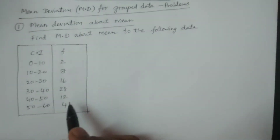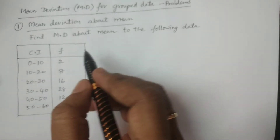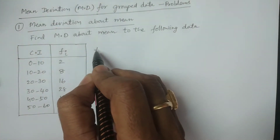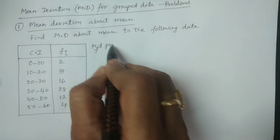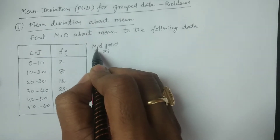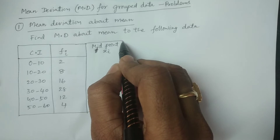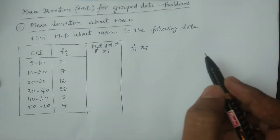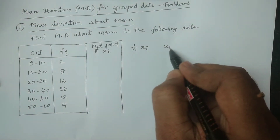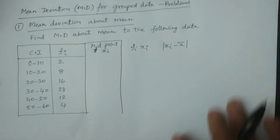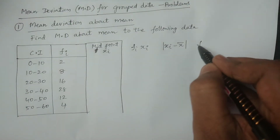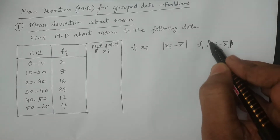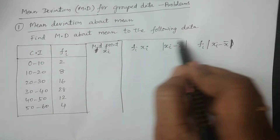Here is the group data, where class interval and frequency are given. I consider frequency as Fi. To calculate the mean, I first calculate Xi, the midpoint. Then I calculate Fi multiplied by Xi to get the mean. Next, I calculate the modulus of Xi minus X̄, and then Fi multiplied by the modulus of Xi minus X̄. These are the columns required for the calculation.